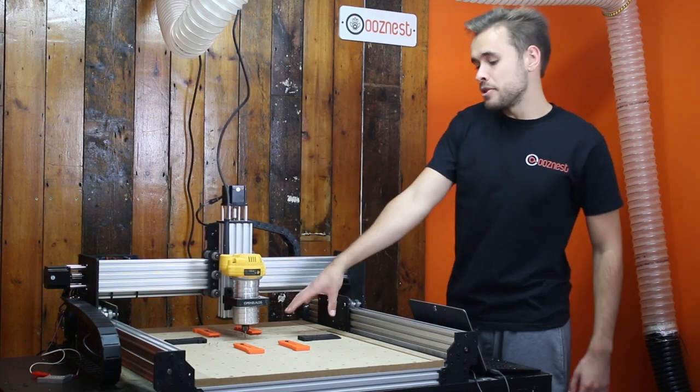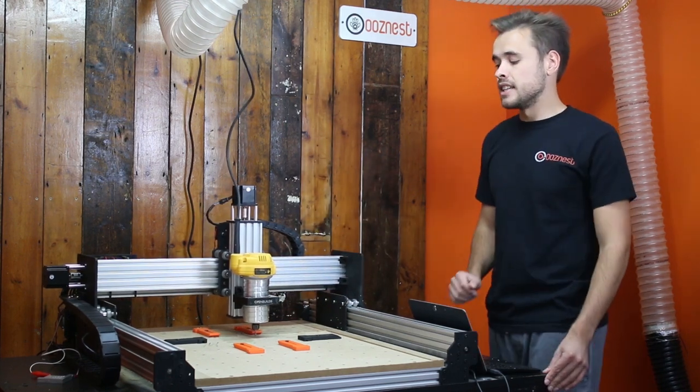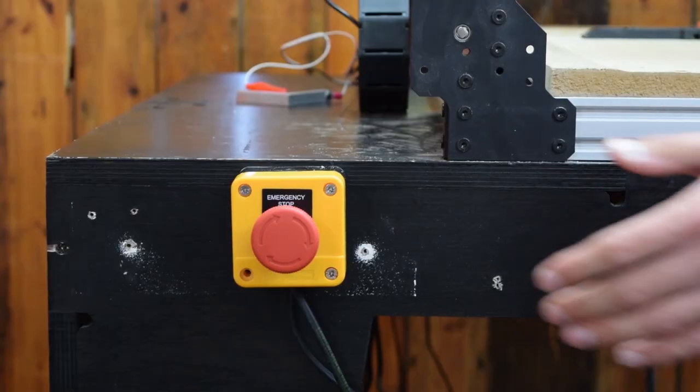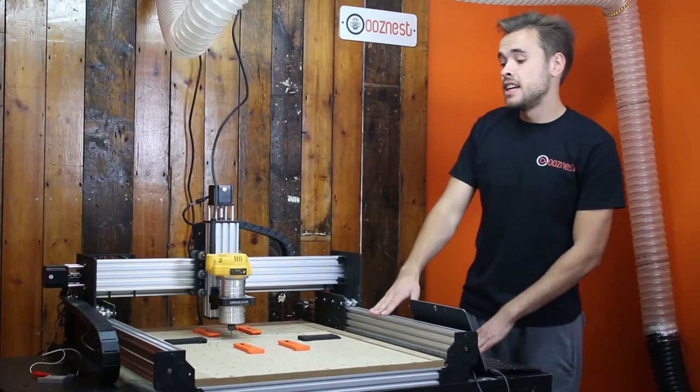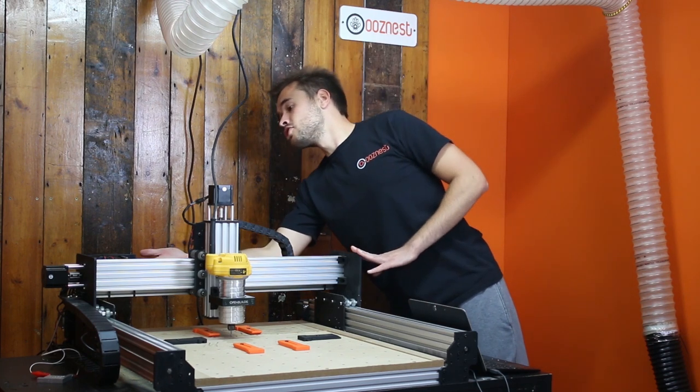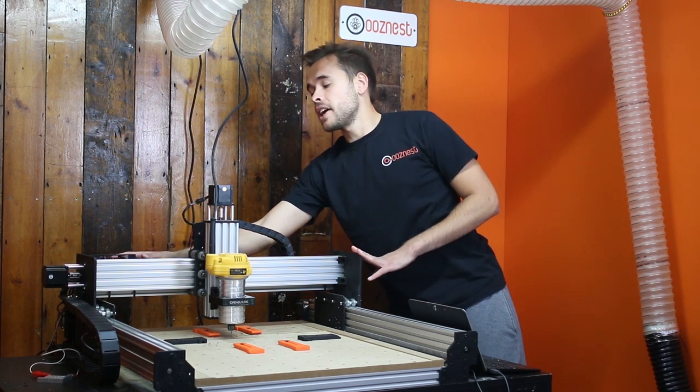So as you can see, if we had a material here now it would be cut in. So what I'm just going to do is press this emergency stop button. This is now stopped the machine. If you now looked at your controller, you can see the lights have gone out.